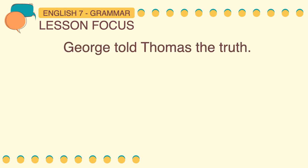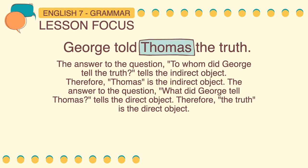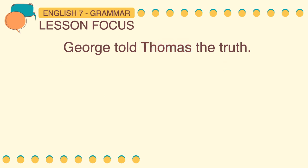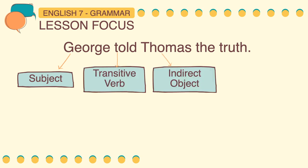In this sentence: George told Thomas the truth. The answer to the question to whom did George tell the truth tells the indirect object. Therefore, Thomas is the indirect object. The answer to the question what did George tell Thomas tells the direct object. So, the truth is the direct object. In this sentence, George is the subject, told is the transitive verb, Thomas is the indirect object, and the truth is the direct object.